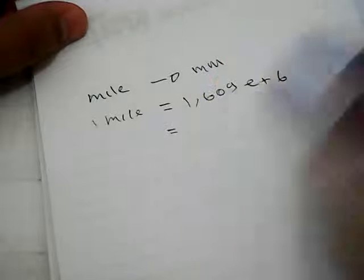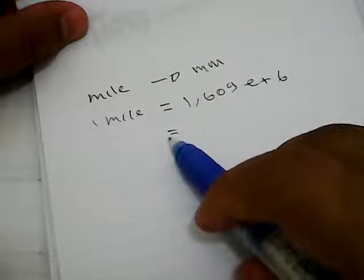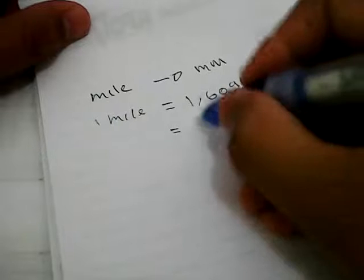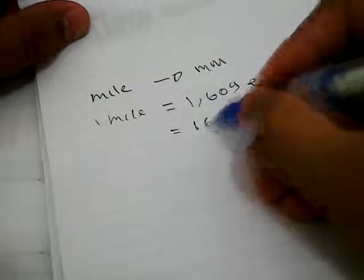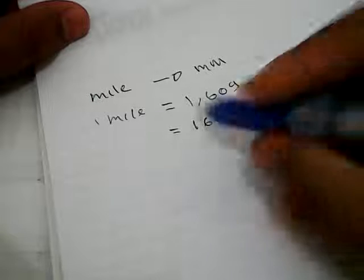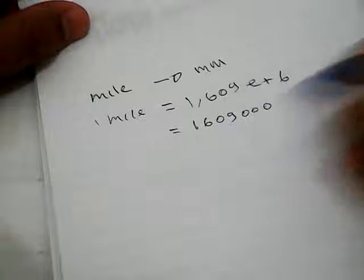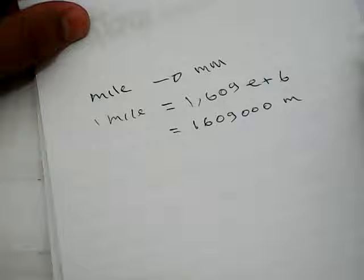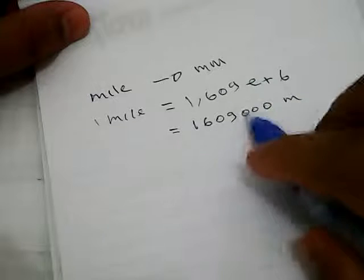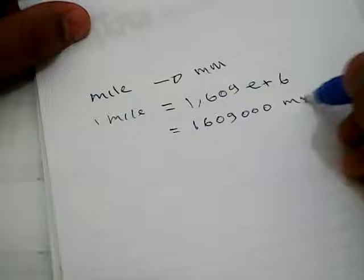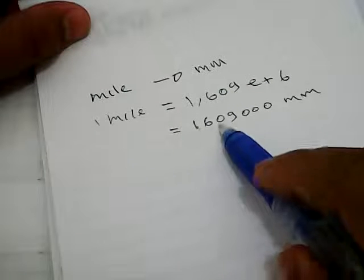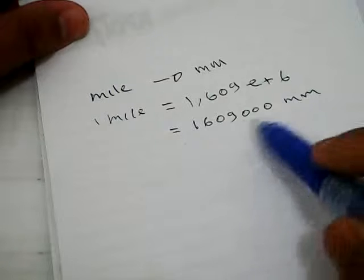You can write it like this: one thousand six hundred nine... It's one million six hundred nine thousand millimeters. One mile is equal to one million six hundred nine thousand millimeters.